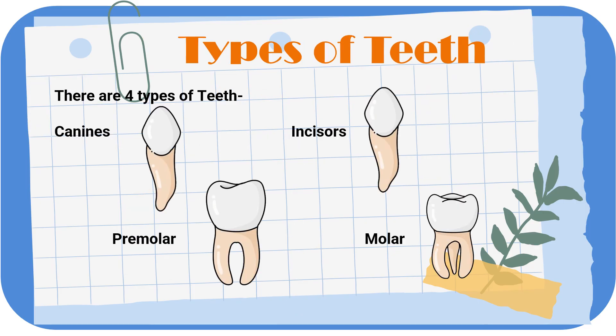Let's see the different types of teeth. We have four types of teeth: canines, incisors, premolars, and molars. Let's meet them one by one.